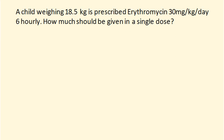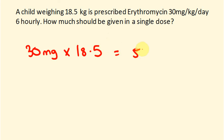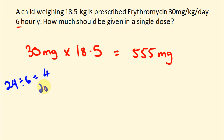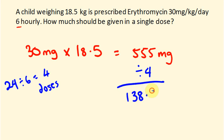Last question. A child weighing 18.5 kilograms is prescribed erythromycin, 30 milligrams per kilogram per day, 6 hourly. How much should be given in a single dose? Let's work out how much this kid should be given per day: 30 milligrams times 18.5 kilograms gives us 555 milligrams — that's how much this kid is getting per day. They're getting this every 6 hours. 24 divided by 6 means they're going to get 4 doses for the day. So we divide 555 by 4 and get the answer of 138.75 milligrams for every dose.